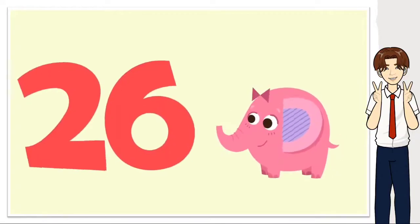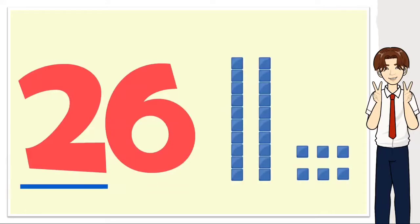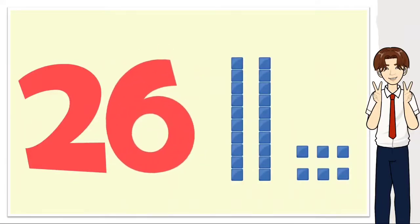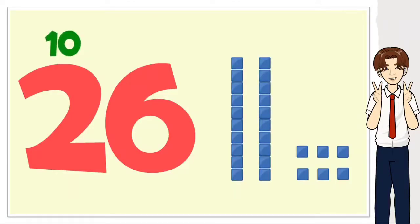In the number 26, the six is in the ones place and the two is in the tens place. The six is worth just six, which is represented by six cubes. The two is worth twenty because it is in the tens place and is represented by two long tens blocks. You can count by tens using the base ten blocks or just count in your head: ten, twenty.